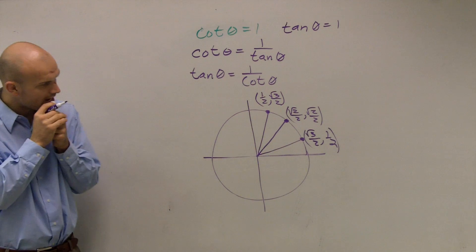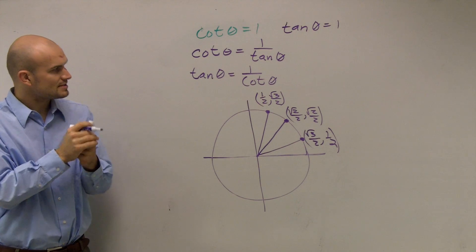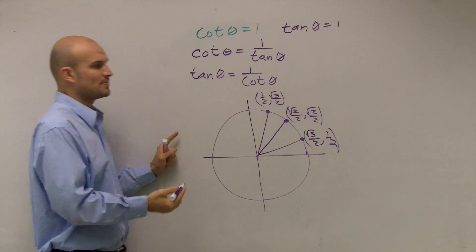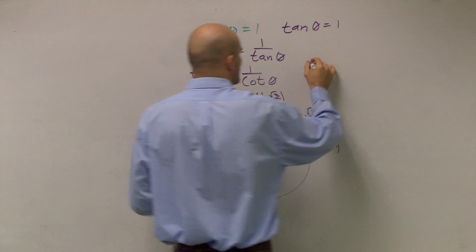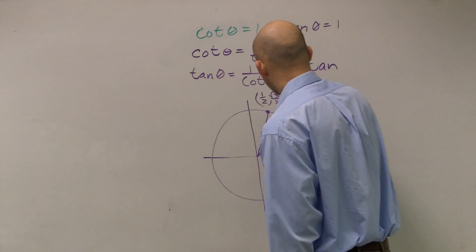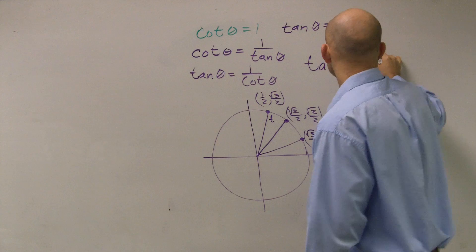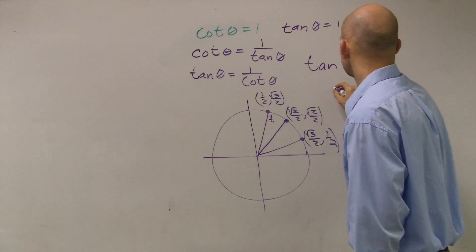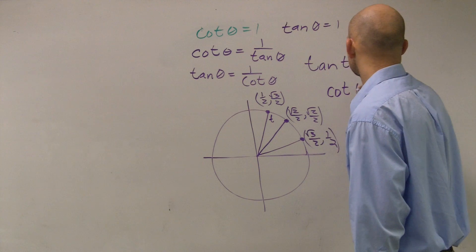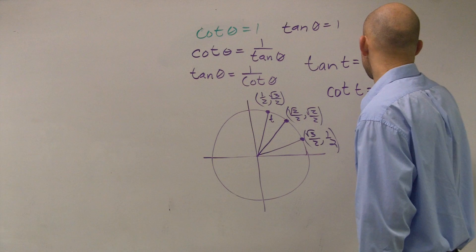Now the thing is, what does tangent and cotangent represent as far as a point t? Well remember for any point t on the line, tangent is equal to y over x and cotangent would be the reciprocal of that, would be x over y.